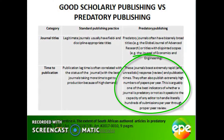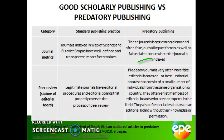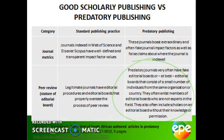Predatory journals often have a high and inconsistent publication rate. They often boast extraordinary and often false journal impact factors, as well as false claims about where the journal is indexed — these are usually displayed prominently on the journal's homepage. Editorial boards are often false, with insufficient or no contact details for board members. The validity of the board can therefore not be established, as the editors cannot be contacted. In some cases, scholars are listed on editorial boards without their knowledge.